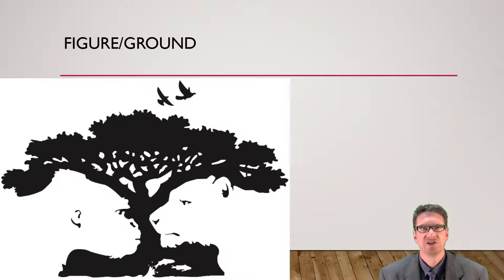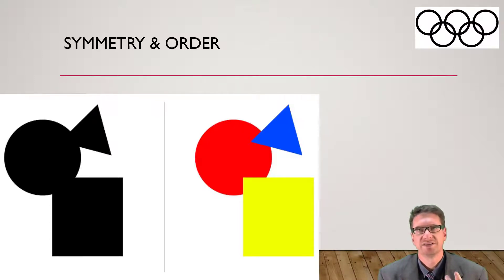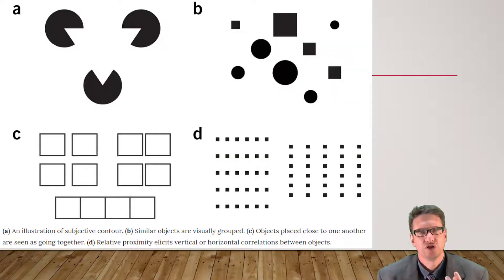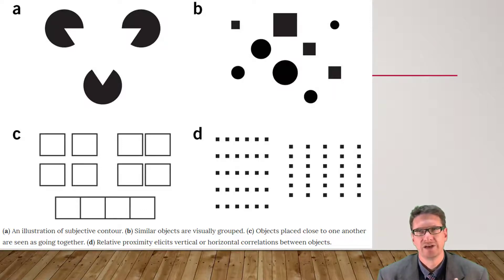Another aspect of Gestalt is symmetry and order. Your brain will interpret the picture on the left as a rectangle, a circle, and a triangle, even when the outlines are incomplete, just because those shapes are simpler than the overall image. The Olympic rings are another example — you see them as separate individual rings when actually it's a linked pattern like a chain. You need to be aware of this when creating graphs, because what you think you may be showing in your data may not be what people perceive.